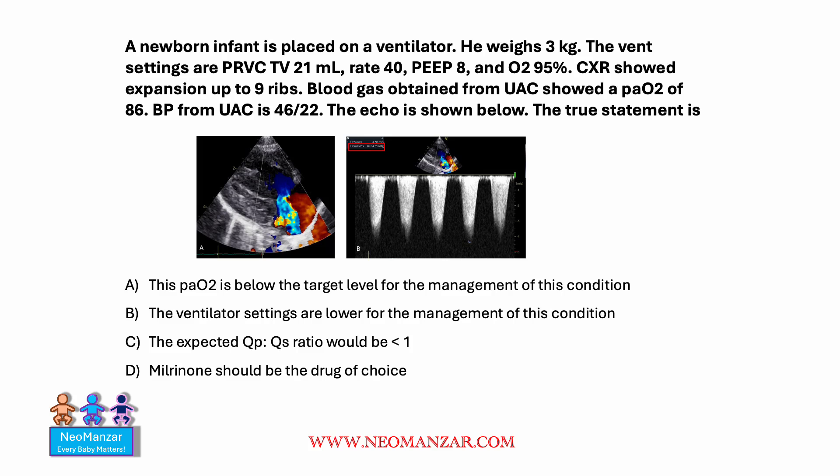Let's try to solve this question together. We have a newborn infant who is placed on a ventilator. He weighs three kilos. The ventilator settings are given here and the chest X-ray showed an expansion up to nine ribs. The blood gas obtained from a UAC showed a PO2 of 86 mmHg. The blood pressure from the UAC is 46 over 22. The echo is shown below.